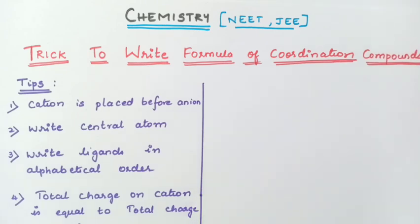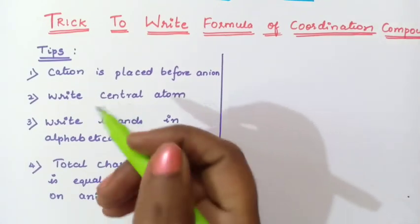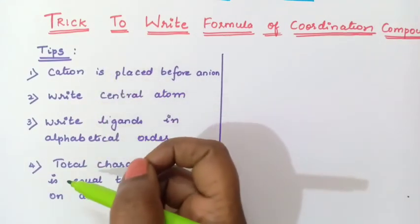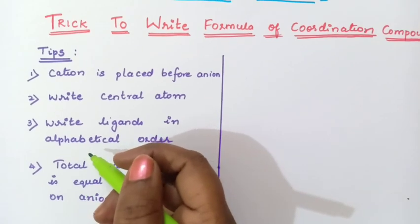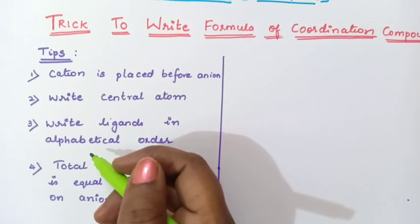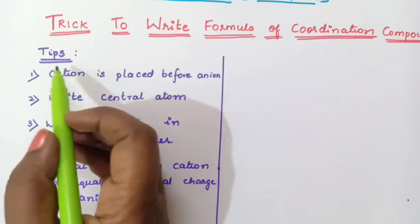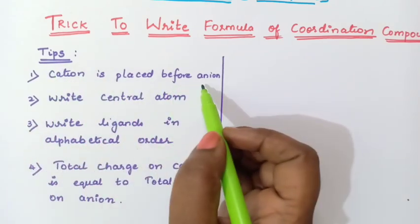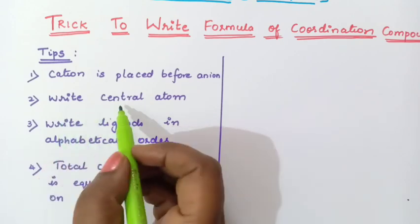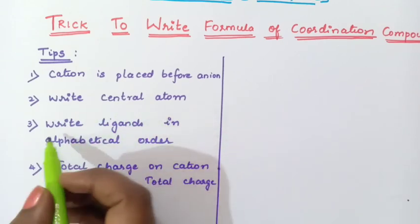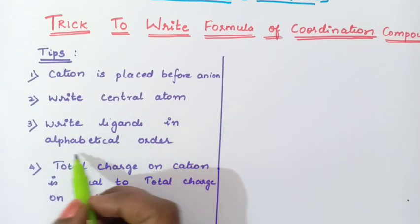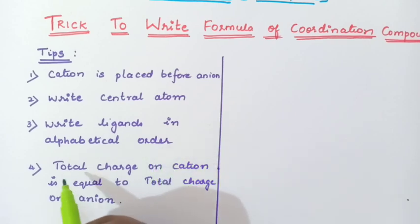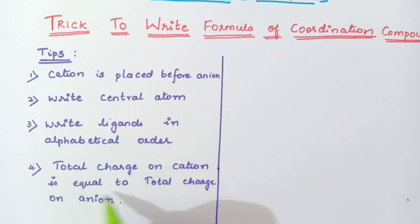So students, first study these few tips. Remember these so that it will be easy for you to write the formula of coordination compounds. First tip: cation is placed before anion. Second: write the central atom. Third: write ligands in alphabetical order. Fourth: total charge on the cation should be equal to total charge on the anion.